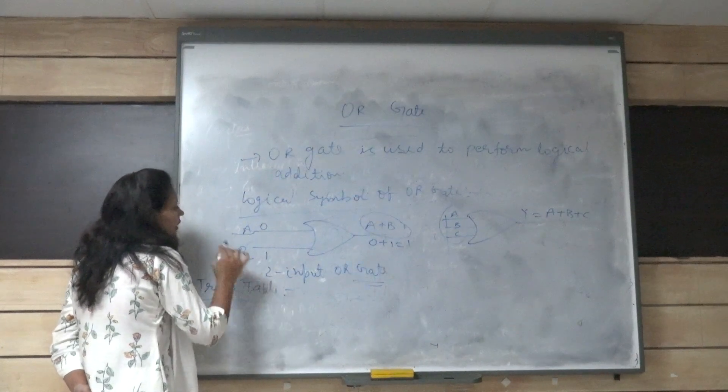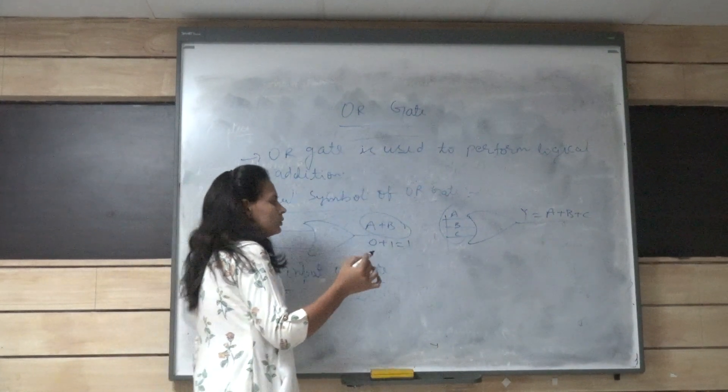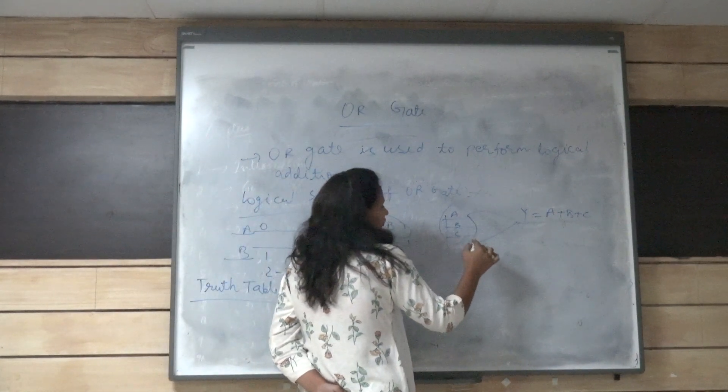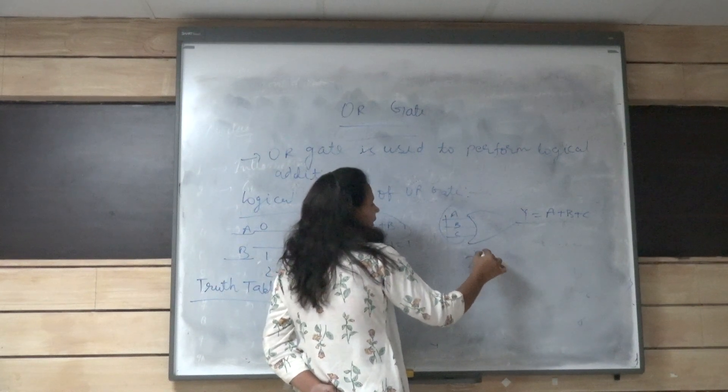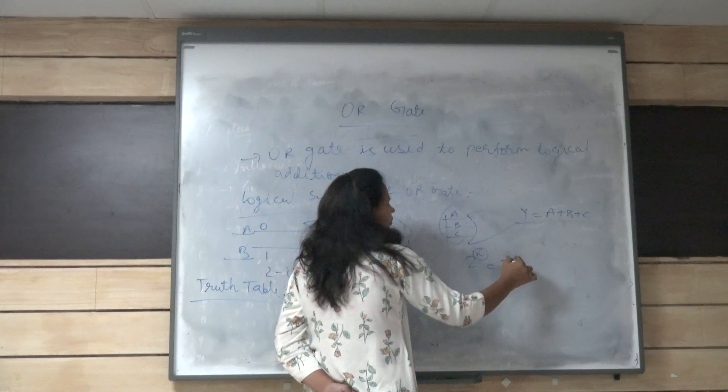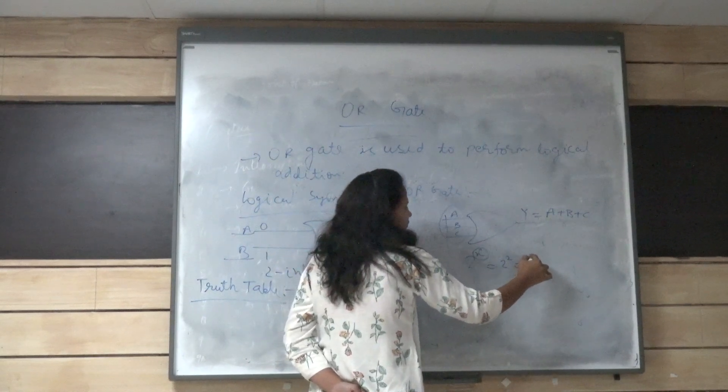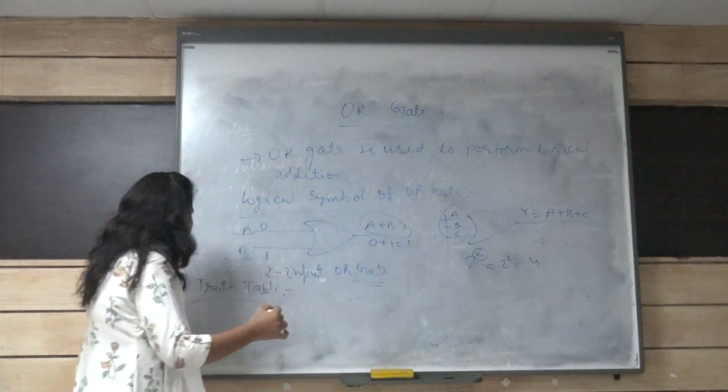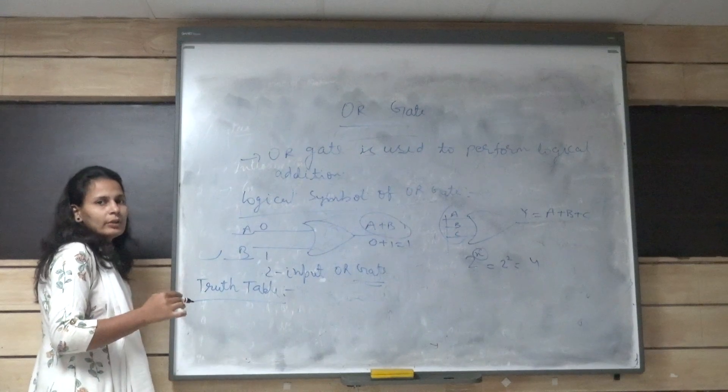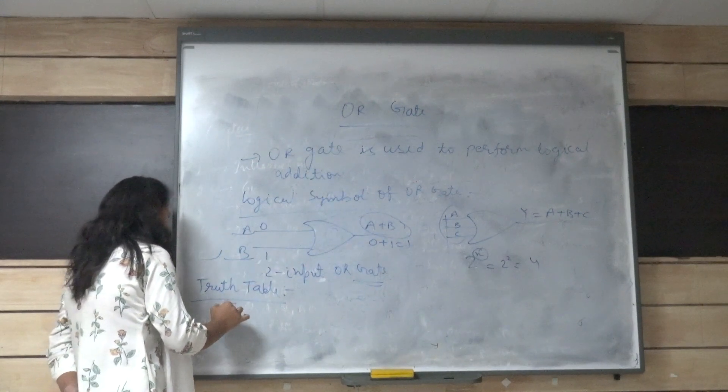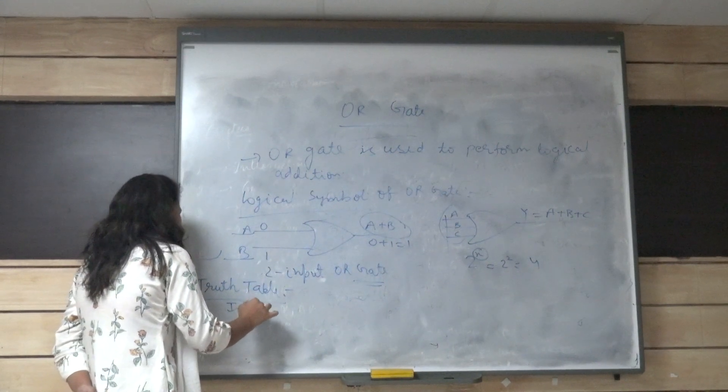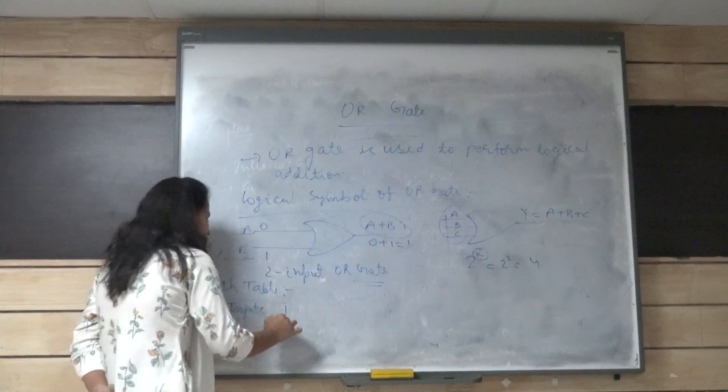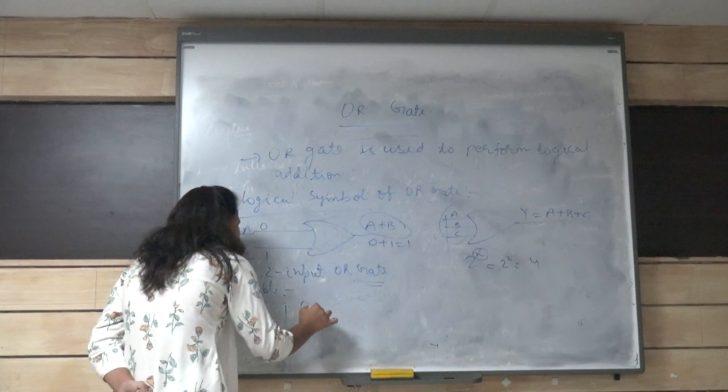In the two input OR gate, we have two inputs. That's why total number of input combinations will be 2 to the power N. Here, N is 2. So 2 to the power 2 will be 4. So in this case, we have total 4 input combinations.